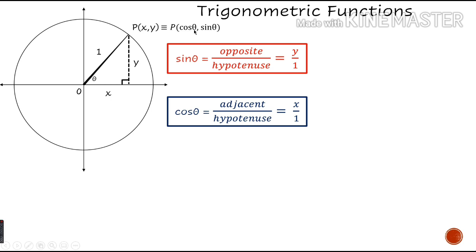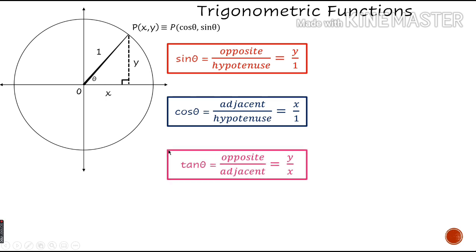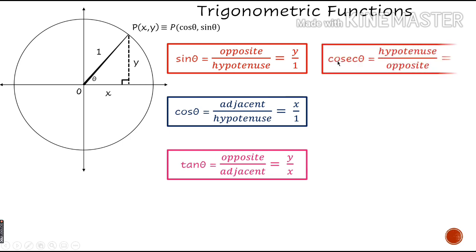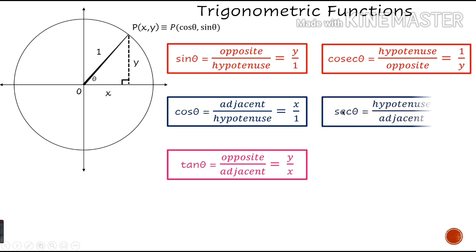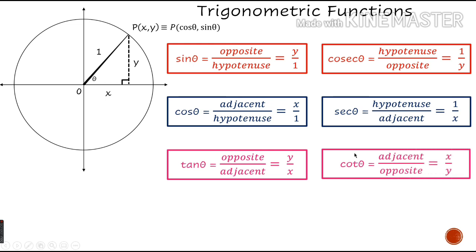This point P is traveling around on the unit circle. Similarly, we can define the other trigonometric ratios: tan theta is y upon x, cosec theta is 1 upon y, sec theta is 1 upon x, and cot theta is x upon y.